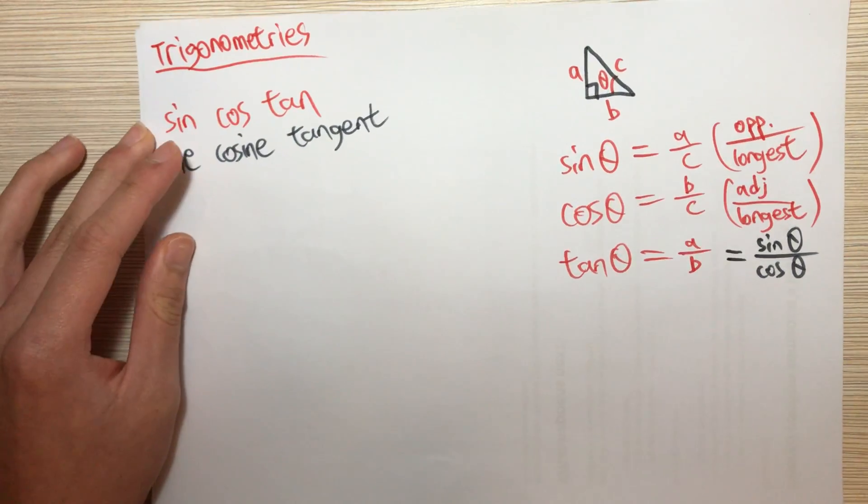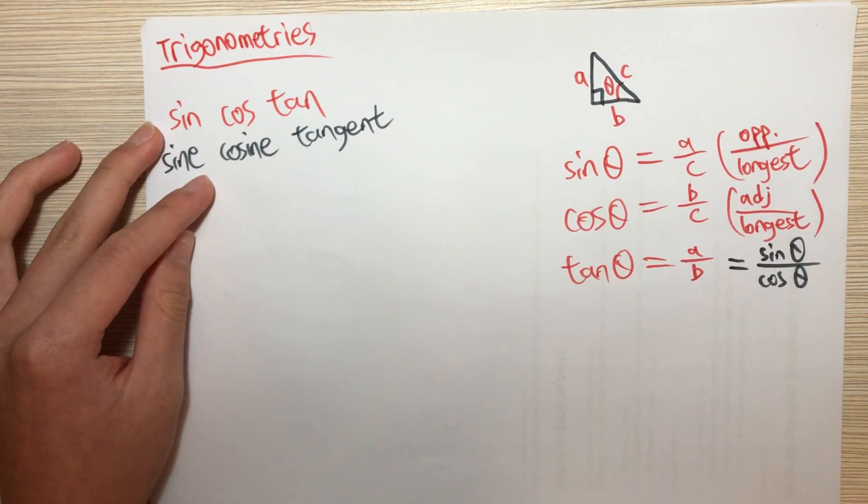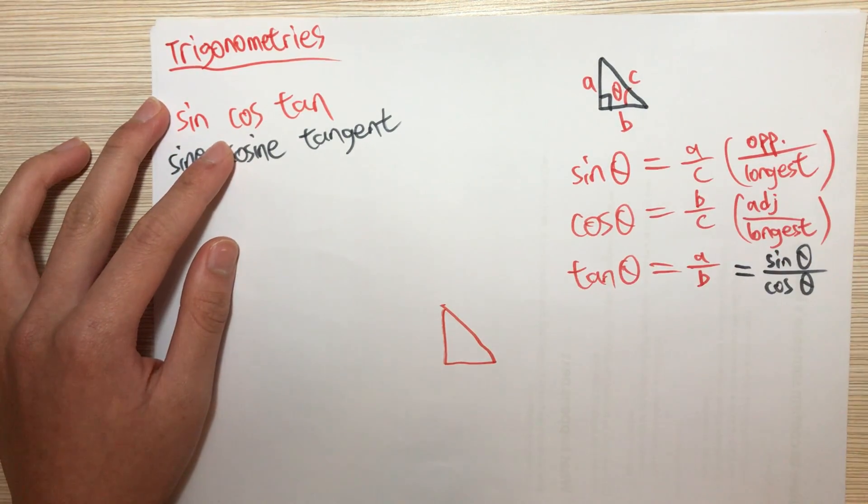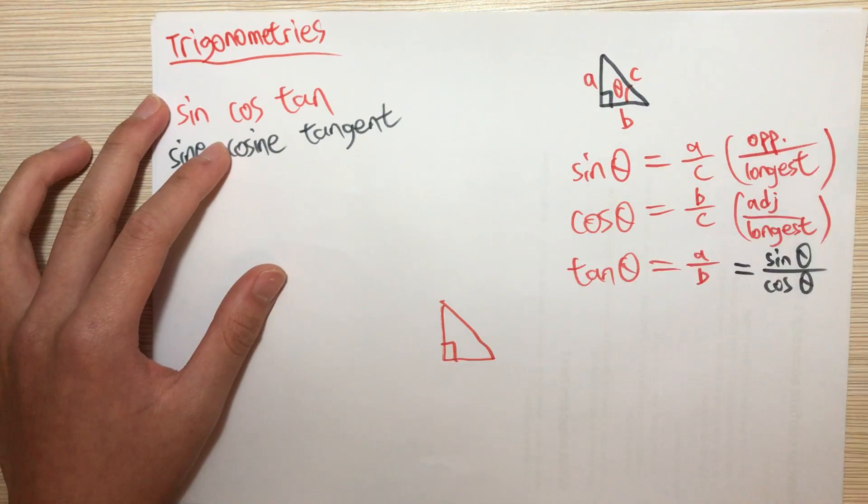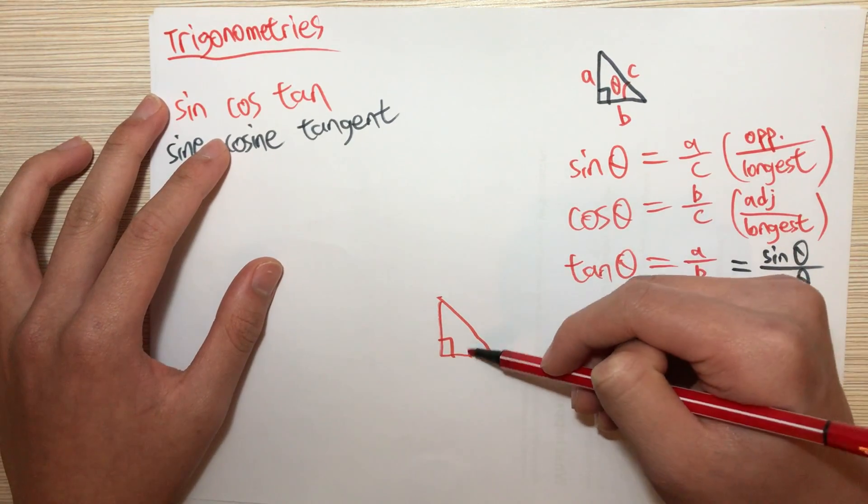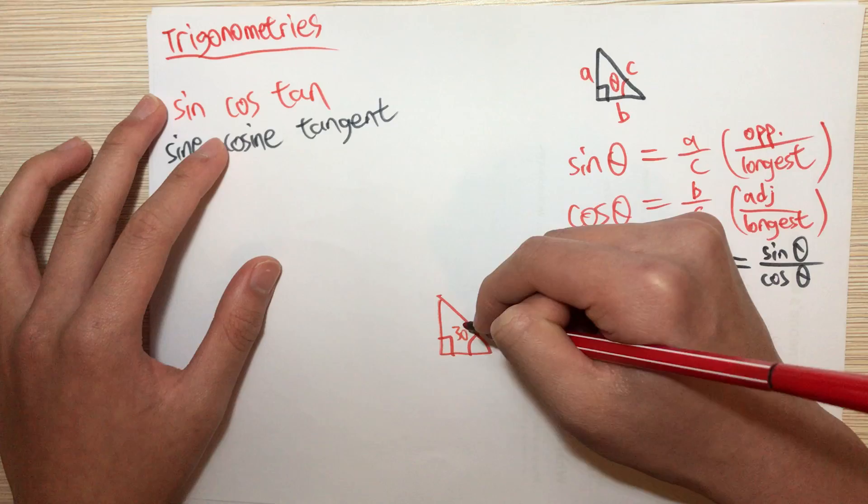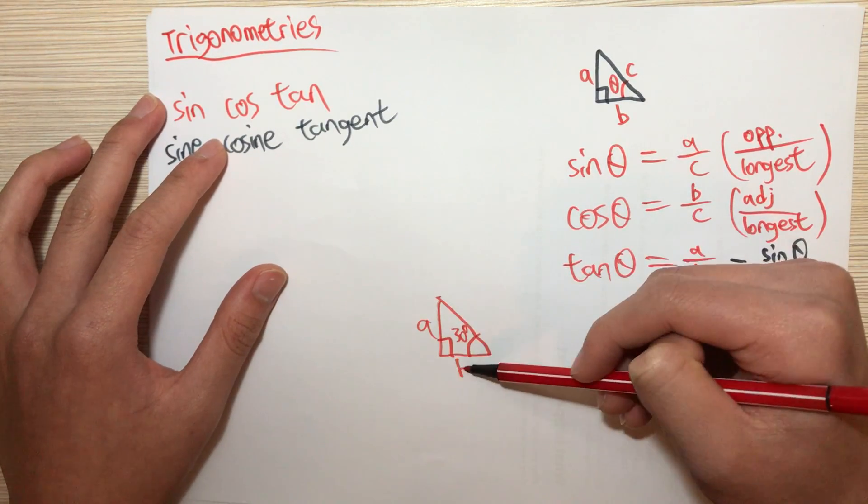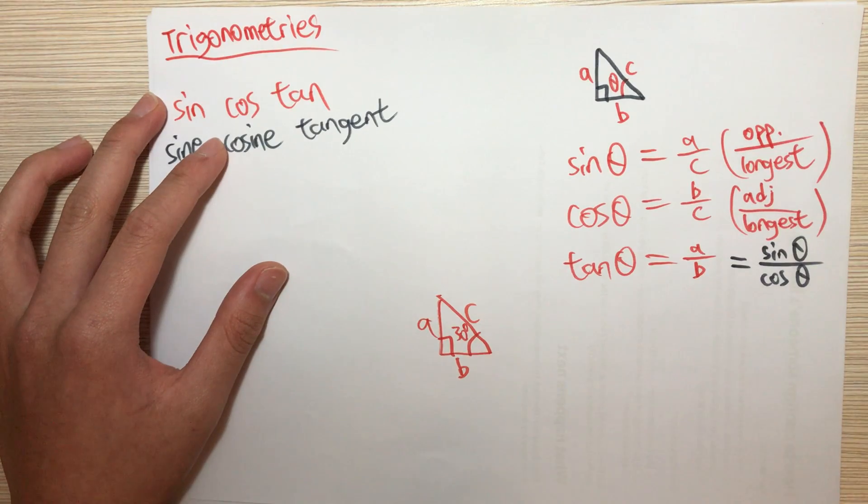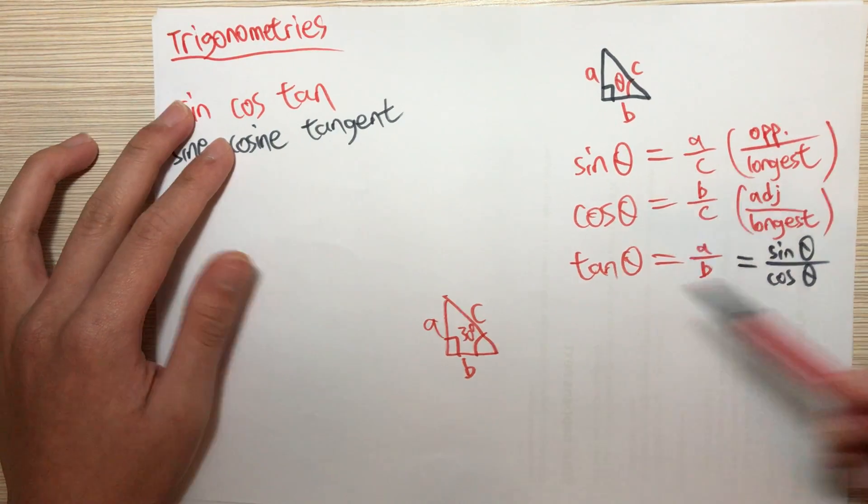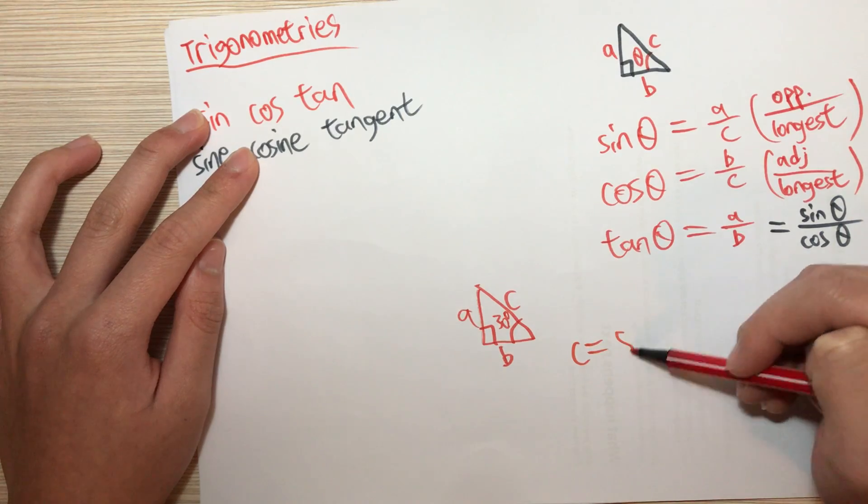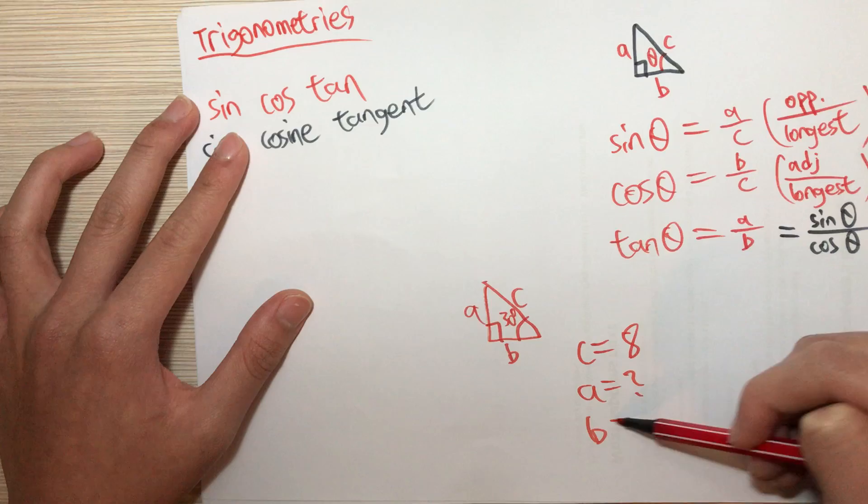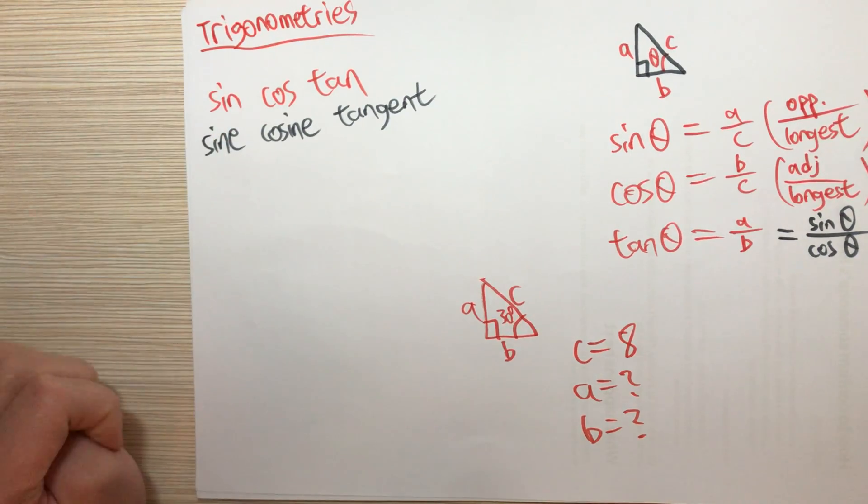So how can we use trigonometry to find out some side, some length of a side? Now consider we have a right angle triangle and we also have an angle 30 degrees, and then this is A, this is B, and this is C.